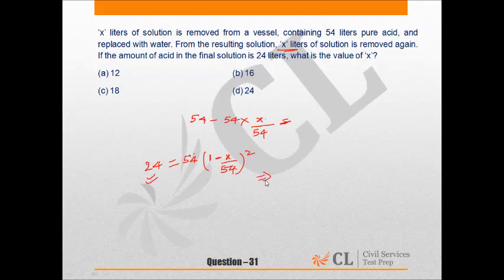From here, we can see that (1 - X/54)² = 24/54 = 4/9. So, it is (2/3)².